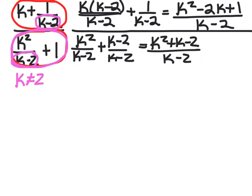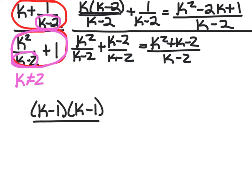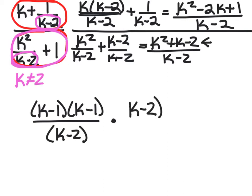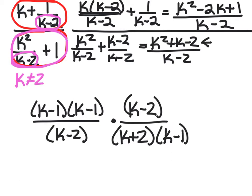Now we need to factor. k squared minus 2k plus 1 is k minus 1 times k minus 1, all over k minus 2. Then I flip and multiply, putting k minus 2 on top, and k squared plus k minus 2 factors as k plus 2 times k minus 1.